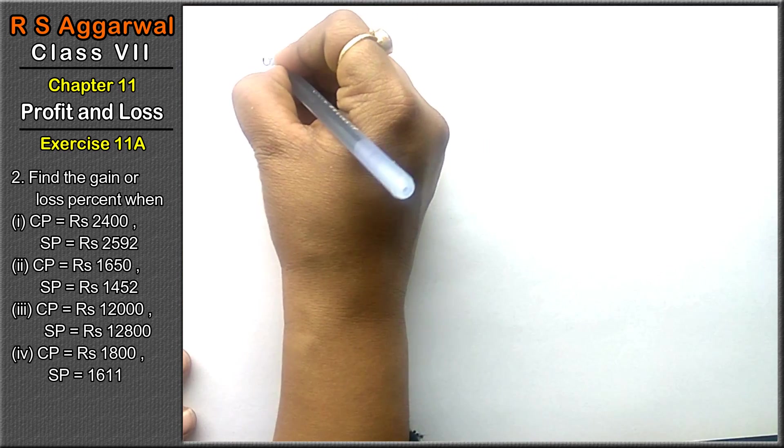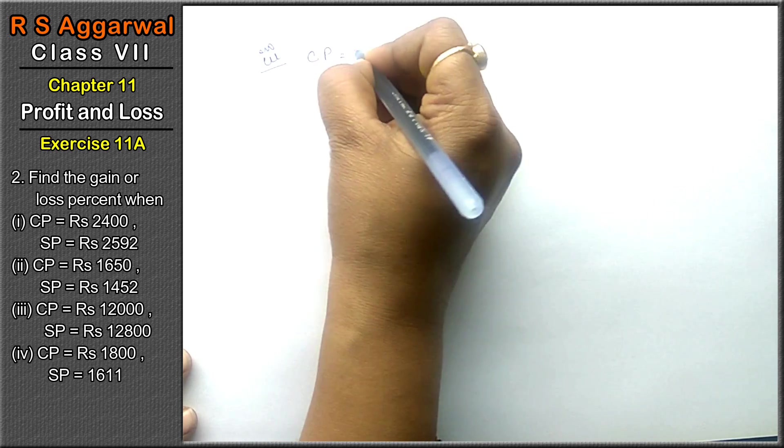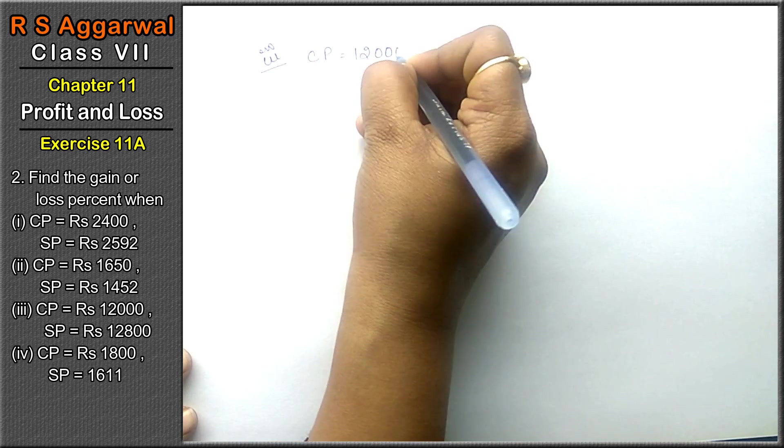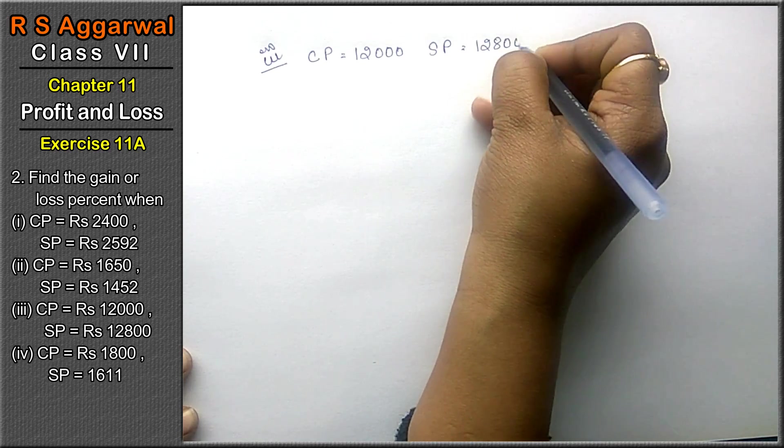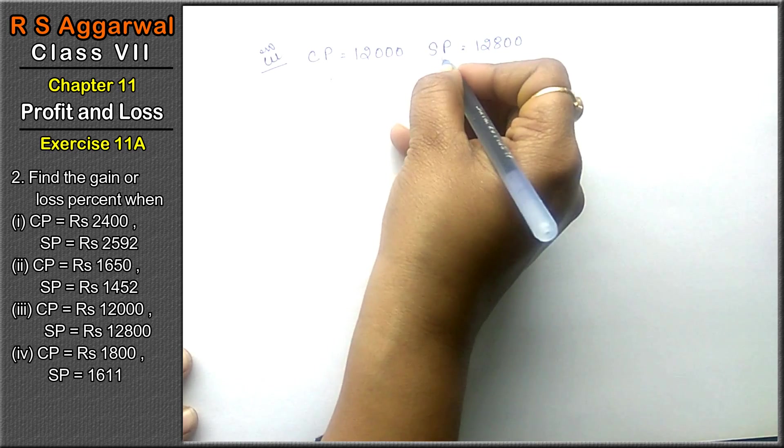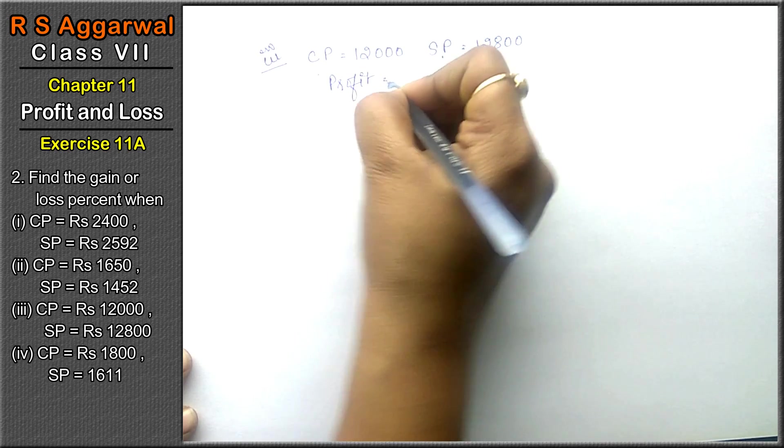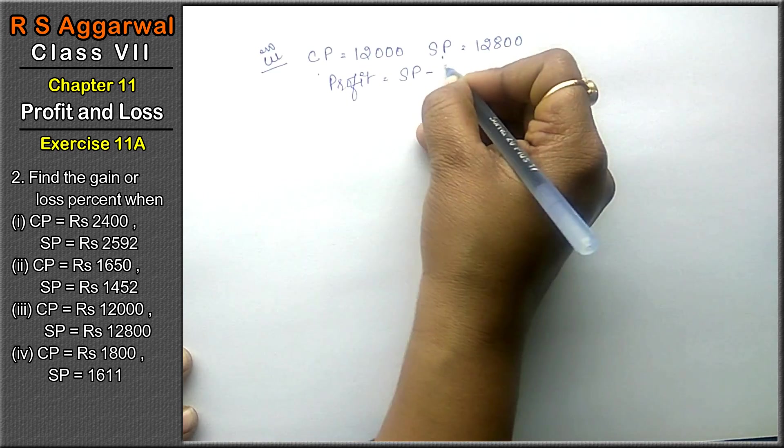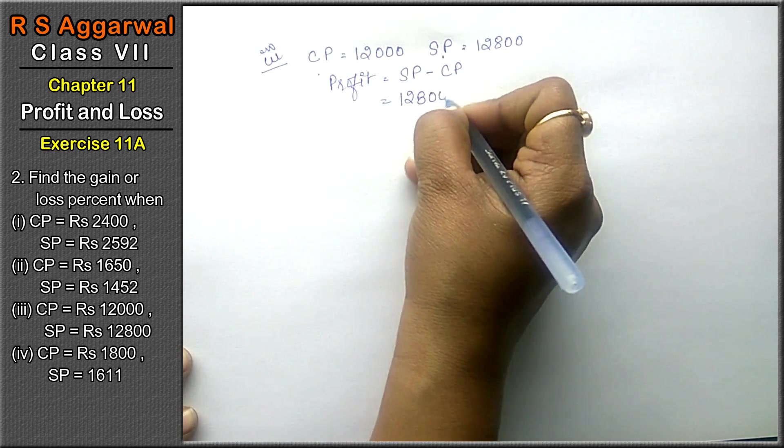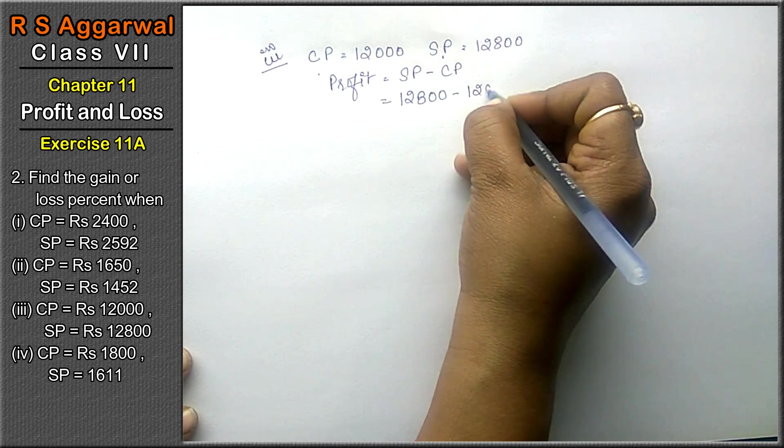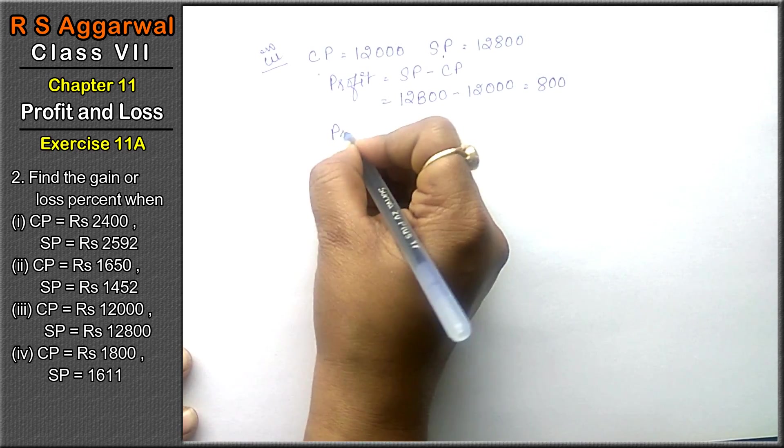Let's do third part. CP equals to 12000 and SP equals to 12800. Here we are getting profit because SP is more than CP. So profit equals to SP minus CP. SP was 12800 and CP was 12000, that means 800 profit.